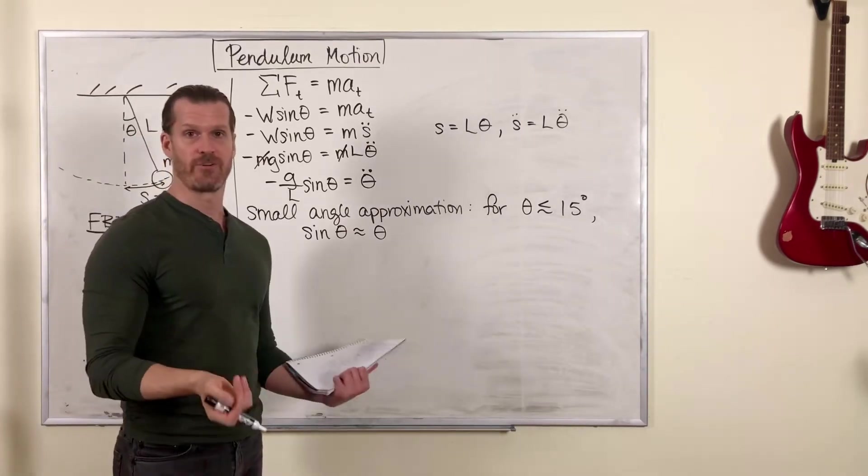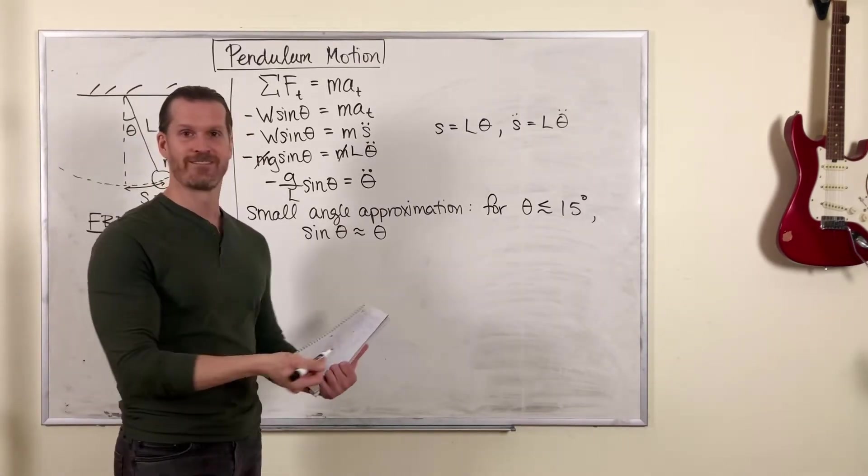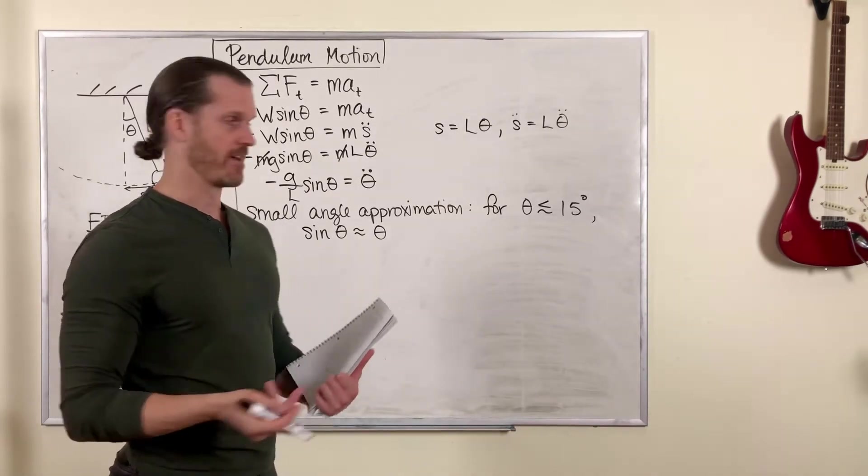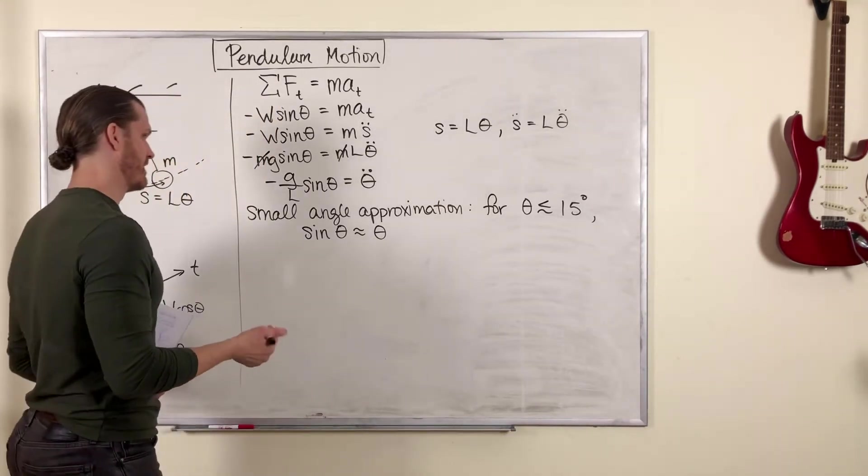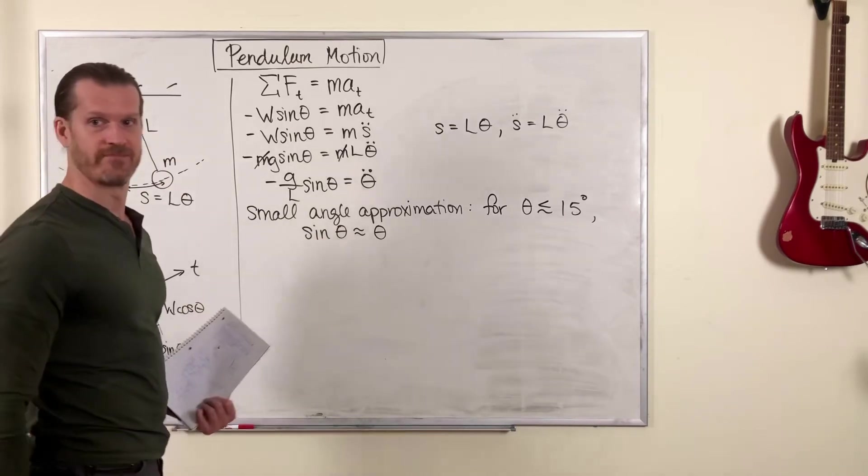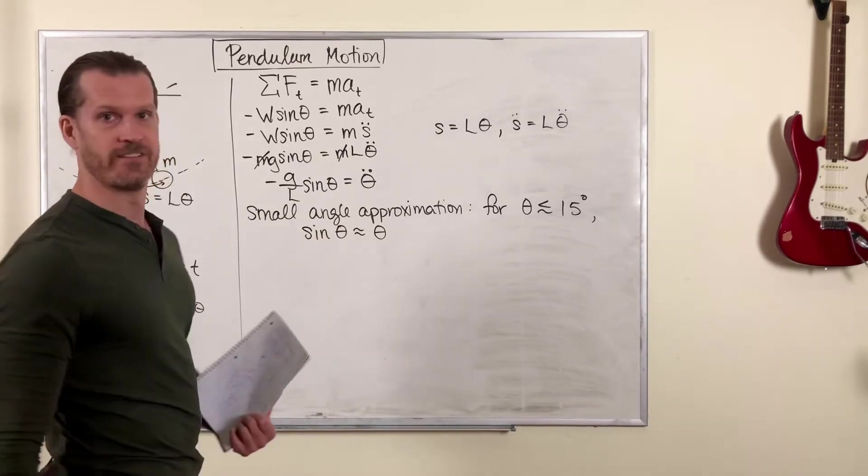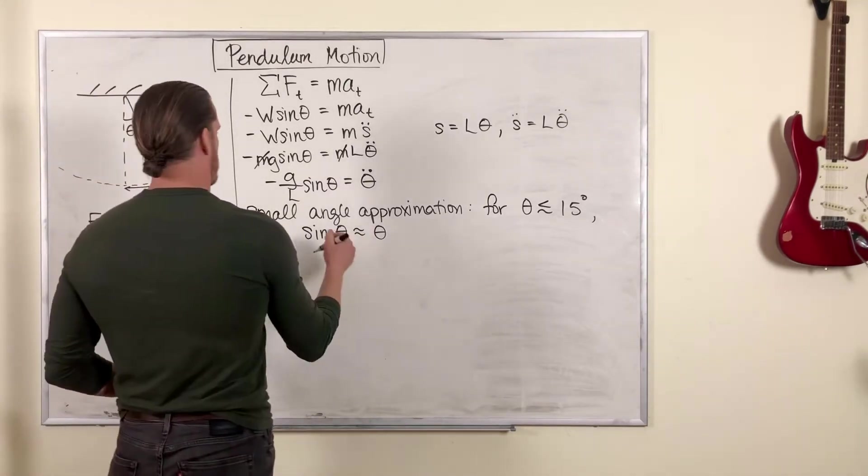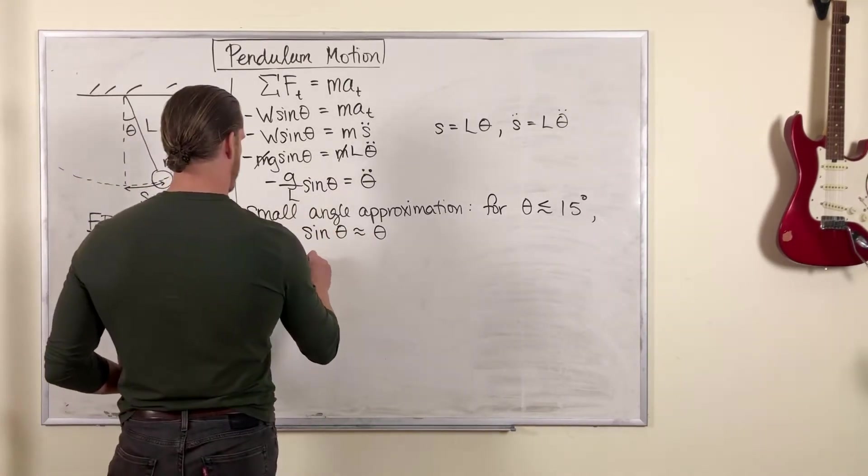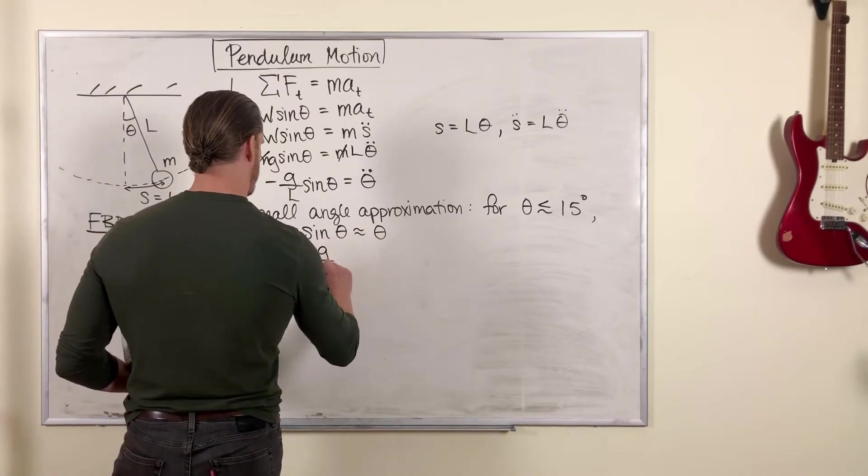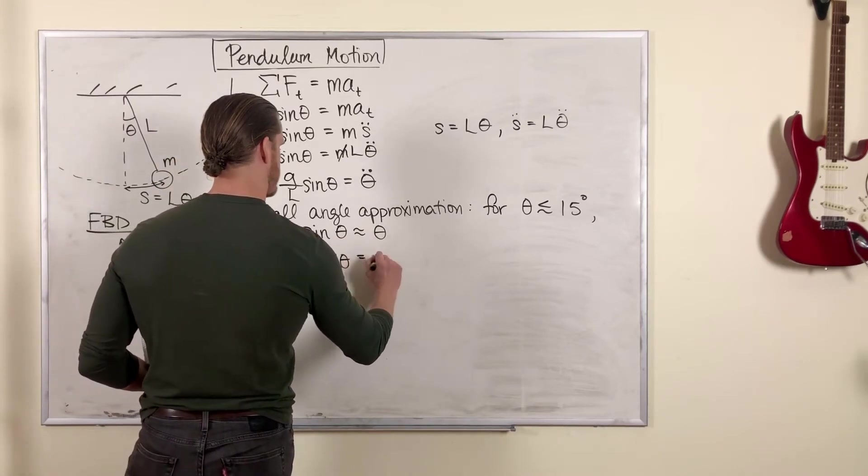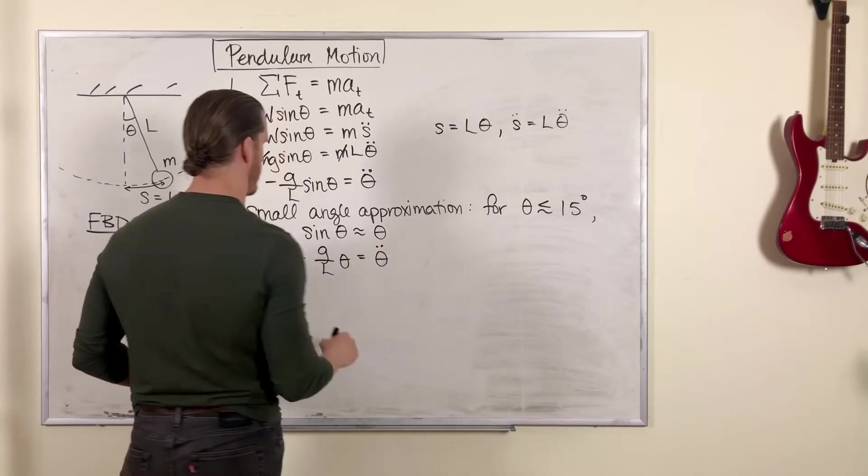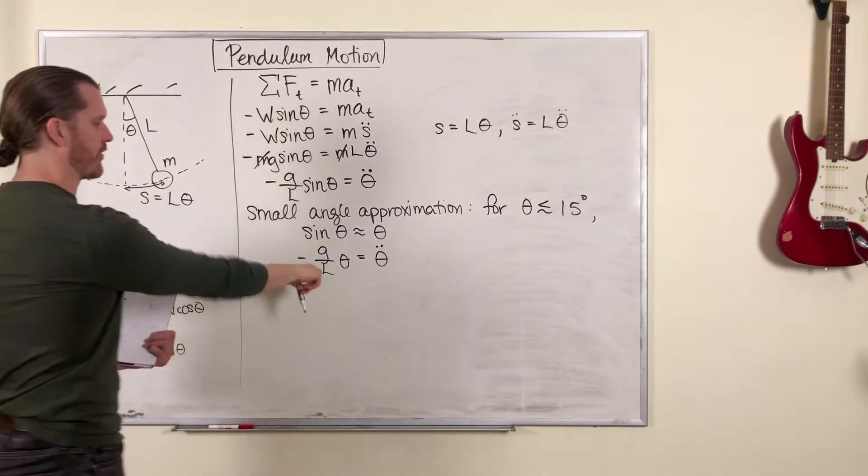We can say that sine theta roughly equals theta. If you want to try this out on your calculator, just type in sine of 3 degrees. And you'll see that it's roughly equal to the angle itself. So that means in this equation we can replace sine theta with theta. We have minus G over L theta equals theta dot dot. And now this looks like...